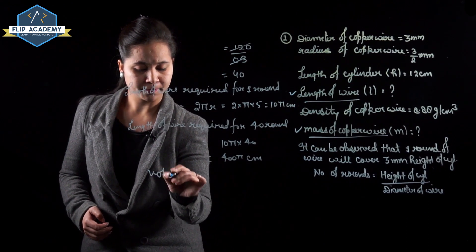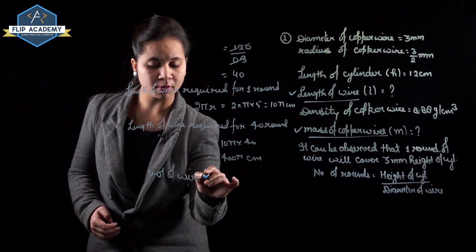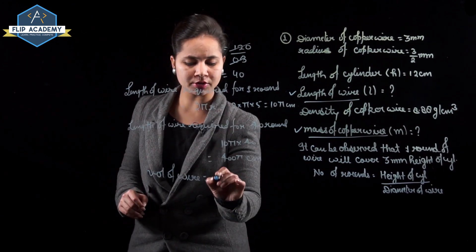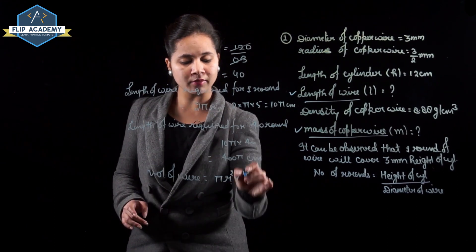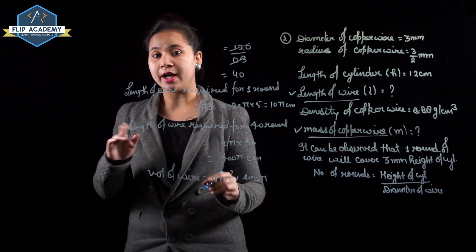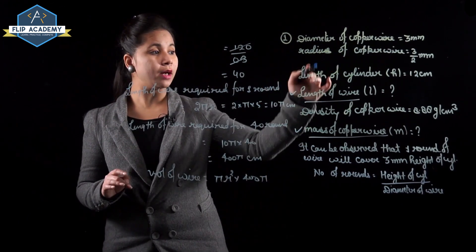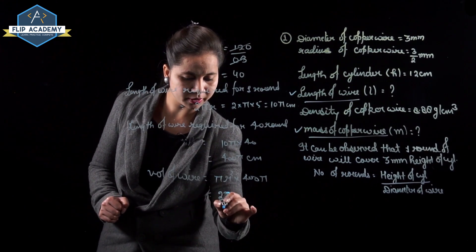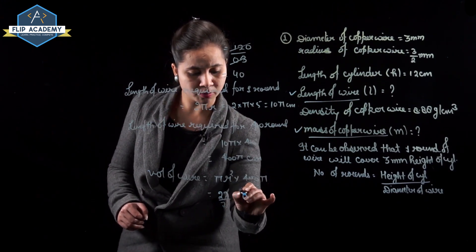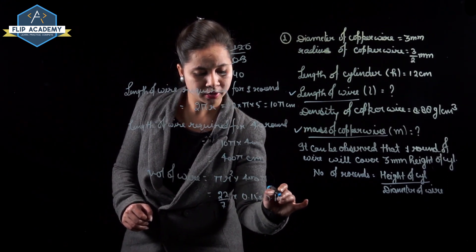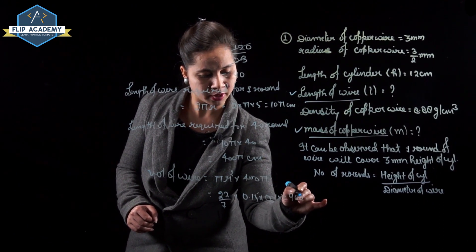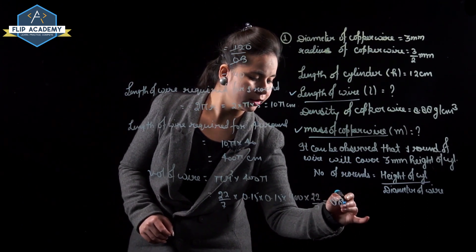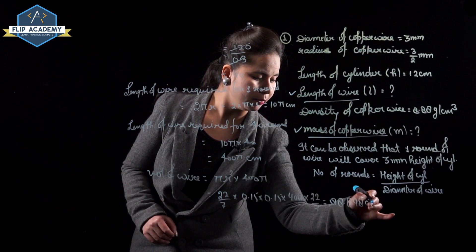Now find the volume of wire. Volume = area of cross section × length of wire = πr² × length. The radius of copper wire is 3/2 mm = 0.15 cm. So volume = π × (0.15)² × 400 = (22/7) × 0.15 × 0.15 × 400 = 88.898 cm³.